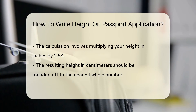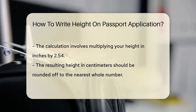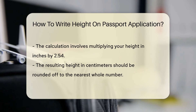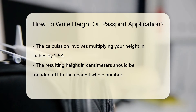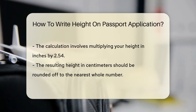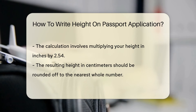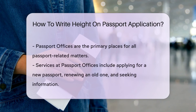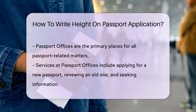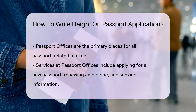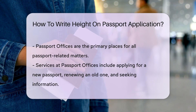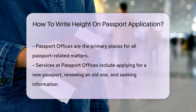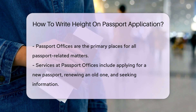To convert your height from feet and inches to centimeters, you can use an online converter or do a quick calculation. Multiply your height in inches by 2.54, and voila, you have your height in centimeters. Be sure to round off to the nearest whole number for simplicity's sake.